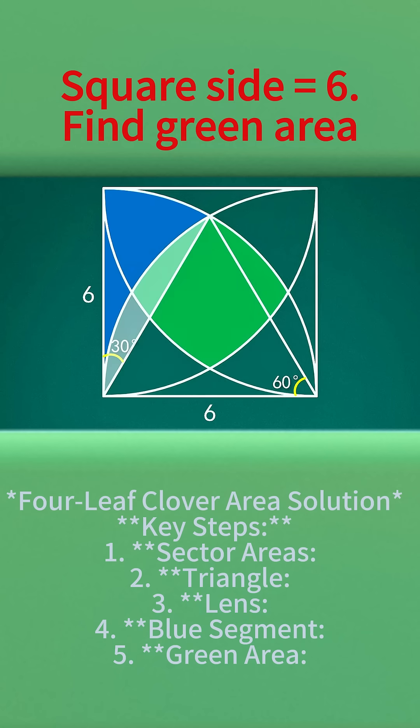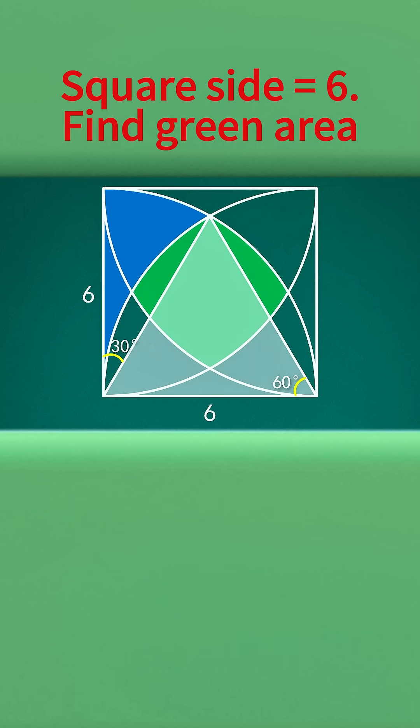The formula for the equilateral triangle area is square root of 3 divided by 4 times the square of the side length. Putting side length equals 6, the area equals 9 times square root of 3.